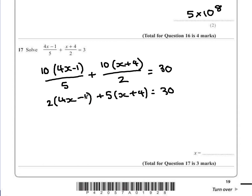The next step would be to expand the brackets and simplify so that we can actually solve this equation. So 2 times 4x is 8x, 2 times negative 1 is minus 2, and 5 times x is 5x, 5 times 4 is 20, and that's still equal to 30.